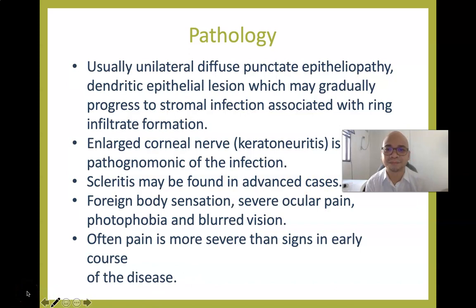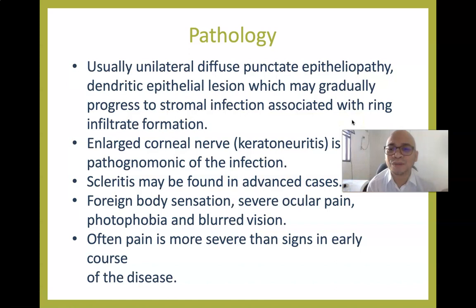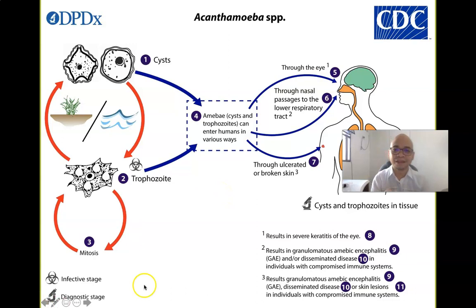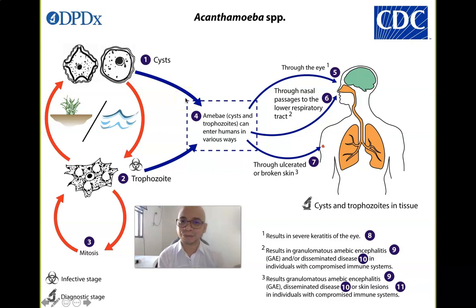The pathognomonic sign of Acanthamoeba infection is an enlarged cornea described as keratoneuritis, considered the cardinal sign. Scleritis (inflammation of the sclera) may appear in advanced cases. Symptoms include severe ocular pain, photophobia, and blurred vision — as if a foreign body is in the eye. Pain is typically more severe than the observable signs early in the disease course.